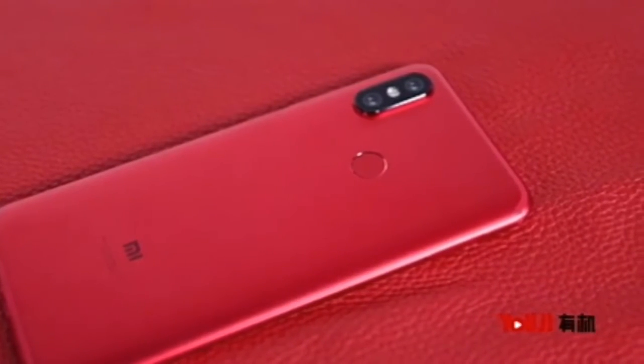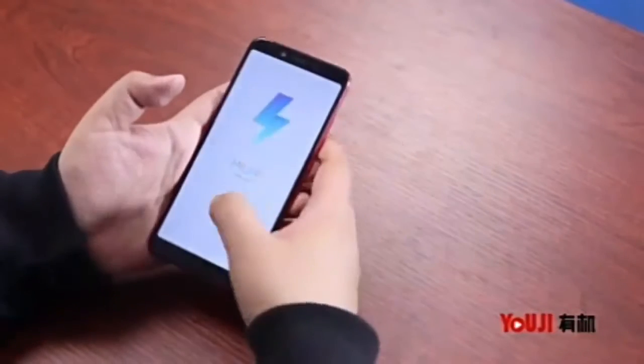The Mi 6X is packed with a 3,010mAh battery that supports Quick Charge 3.0 18W fast charging. By charging for just 30 minutes, the phone can gain 50% power. It also features AI Smart Power function.